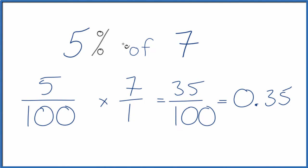So 5% of 7 is 0.35. You could also think of it this way.